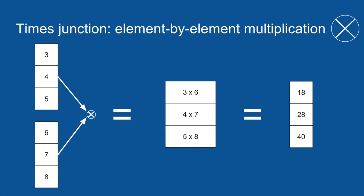And very closely related to this, you've probably guessed, the X in the circle is element by element multiplication. It's just like addition, except instead of adding, you multiply. For instance, three times six gives you a first element of 18. Four times seven gets you 28. Again, the output vector is the same size of each of the input vectors.